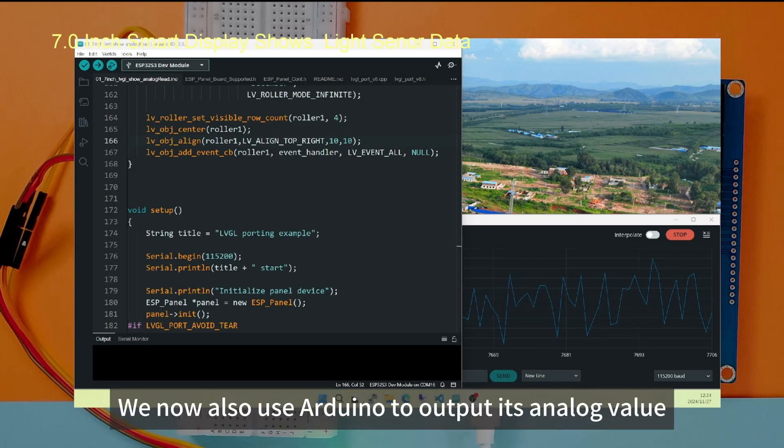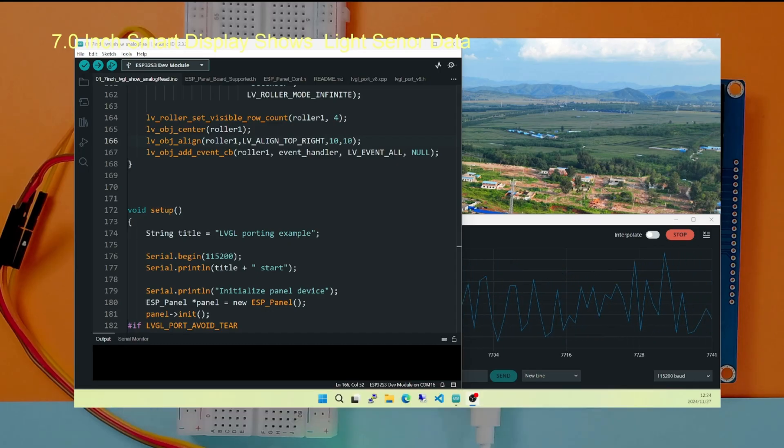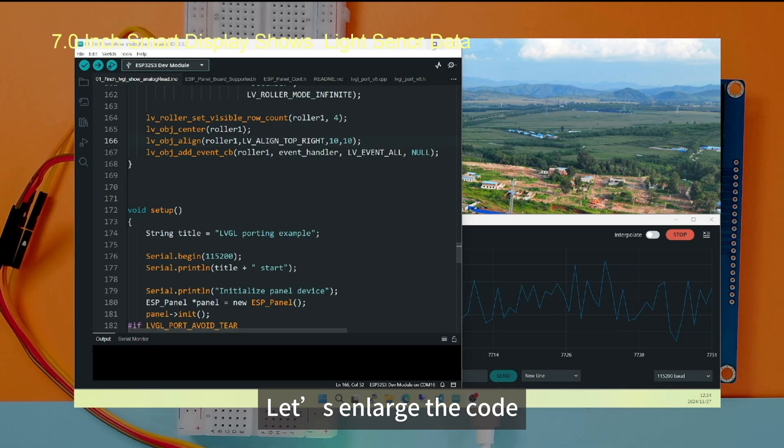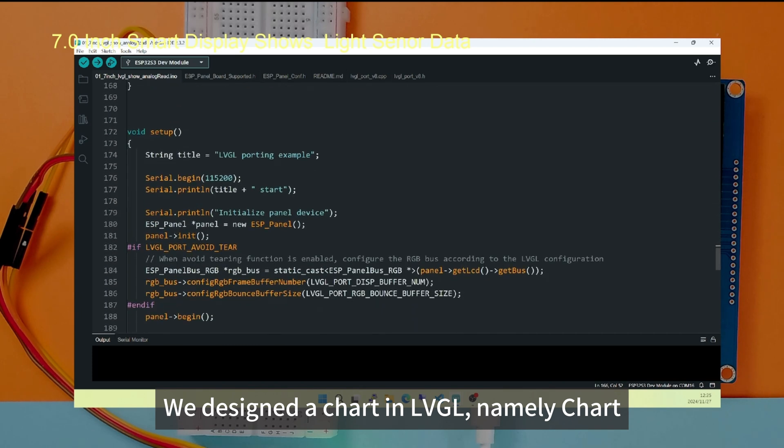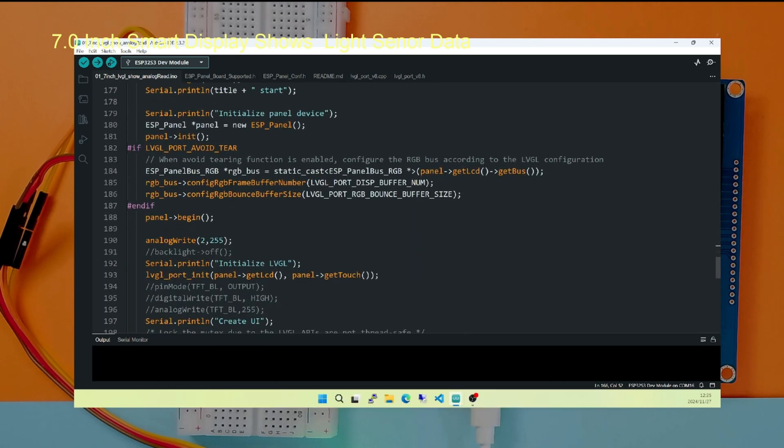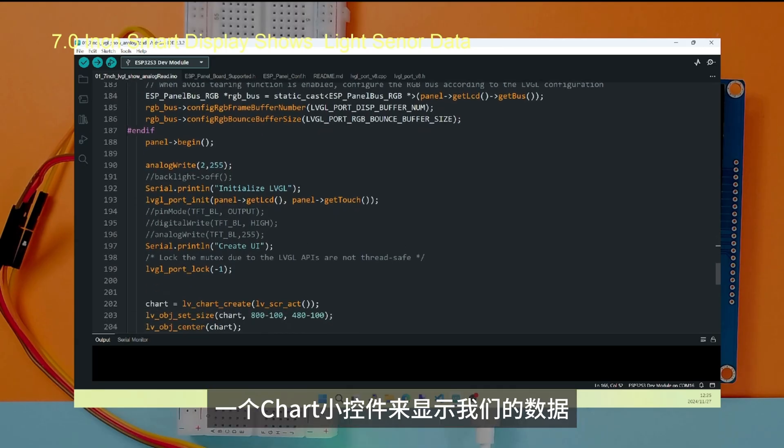We now also use Arduino to output its analog values. You can see that this waveform is displayed here. Let's enlarge the code. We designed a chart in LVGL, namely charts. A small chart control to display our data.